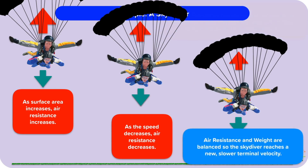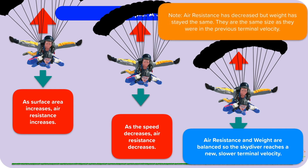Eventually, they'll slow down so much that their air resistance will decrease to the point that it's equal to the weight, but in the opposite direction. Air resistance and weight are balanced, so the skydiver reaches a new, slower terminal velocity. They're still falling downwards, but at a constant, safe speed, so they can land on the ground. Note: air resistance has changed, but weight has stayed the same. This time air resistance has decreased. The forces of air resistance and weight are the same size as in the previous fast terminal velocity, but this time the skydiver is travelling more slowly.